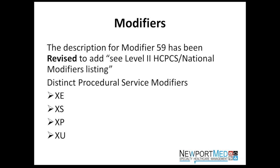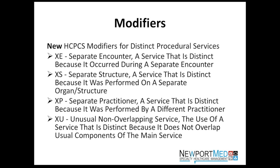Modifier 59 has been revised, and four new HCPCS modifiers have been added. They are known as the X modifiers — XE, XS, XP, and XU. These new X modifiers are a breakdown of Modifier 59, established by CMS to allow providers to specify the reason for a distinct procedure or service. XE is for a separate encounter, XS is for a separate structure, XP is for a separate practitioner, and XU is for an unusual non-overlapping service.